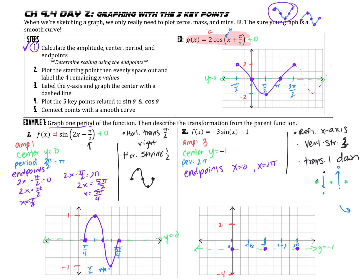Because of the reflection, instead of going up to the maximum at pi over 2 as I would normally do, I'm going down to the minimum. Then between pi and 2 pi, I go up to the maximum. So the reflection means that instead of going up first for sine, I'm going down first. Now I have my 5 points, I'm going to connect the dots, and there is one period of this sine graph.